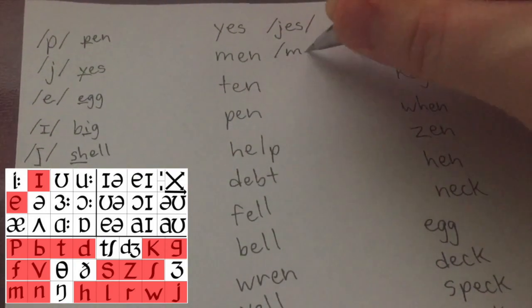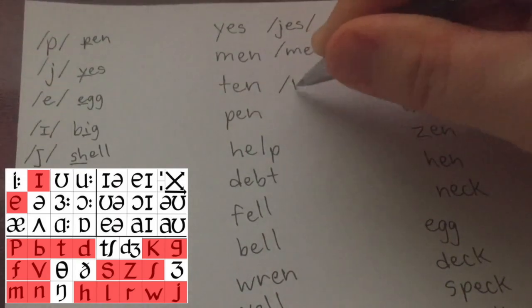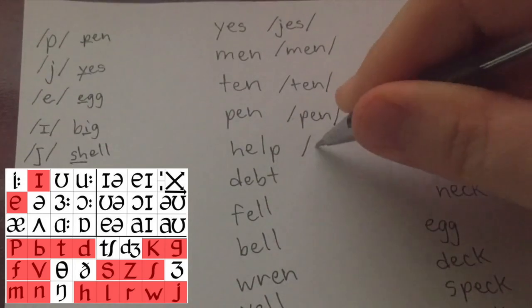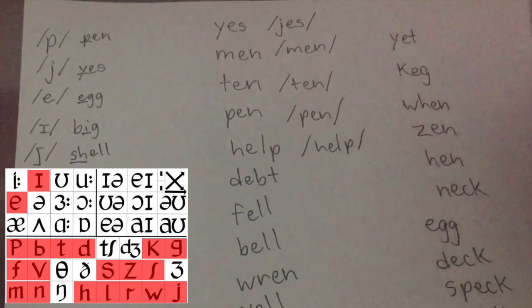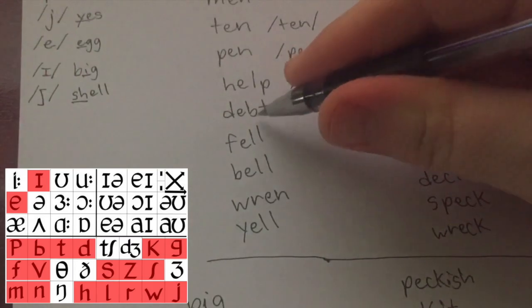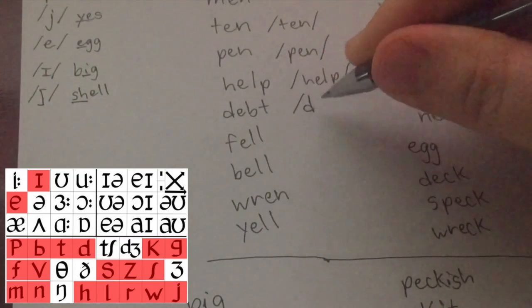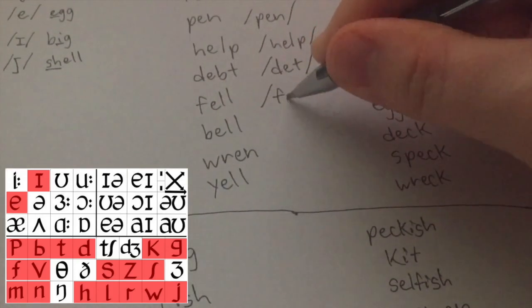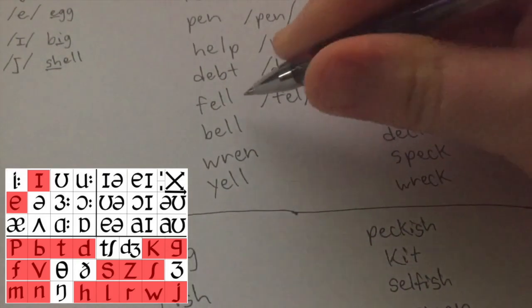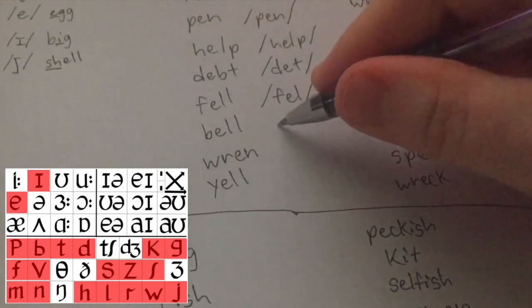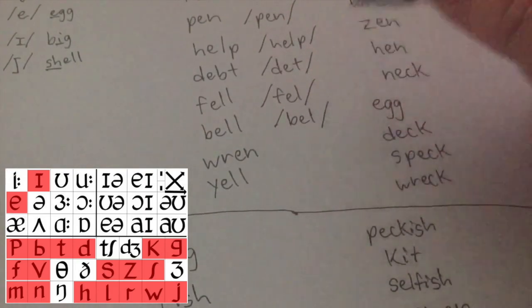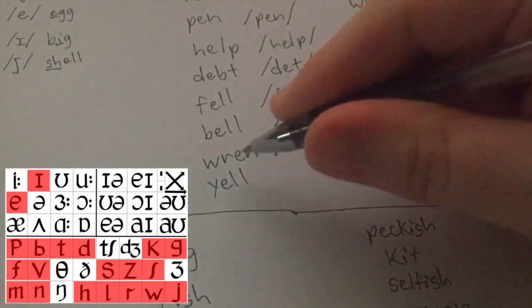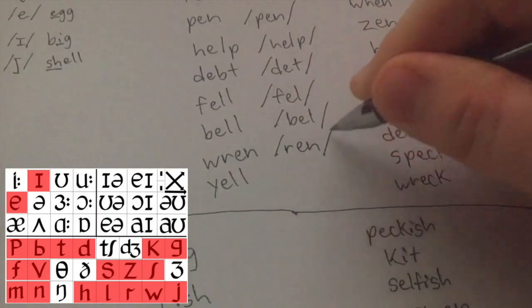This is men. Ten. Pen. This one's easy. Help. No, you can't hear that sound. Debt. Fell. Don't double up on the consonants. Bell. Ren. You can't hear the W. Ren.